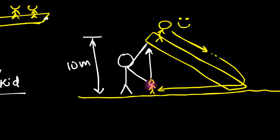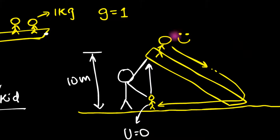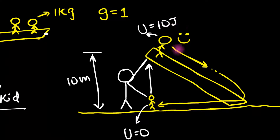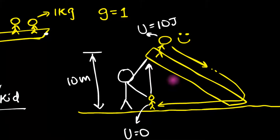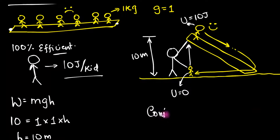We can also think about the energy of the kid. At the bottom, the kid is at its lowest energy level — let's call it zero joules. When the kid comes all the way up, since you did 10 joules of work per kid, you increase its potential energy to 10 joules. Then the kid uses that 10 joules converting it to kinetic energy as it slides down, eventually losing all that energy. With many kids, you can keep doing this over and over and maintain a constant current. This is like an ideal cell.